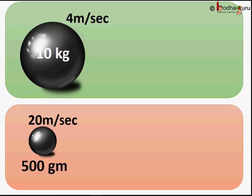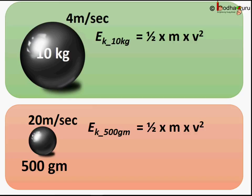So, let's find out which object has more kinetic energy. For the heavier ball, kinetic energy is given by the formula half mv square. Also, for the smaller and lighter ball, the kinetic energy is equal to half mv square.